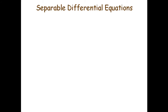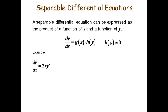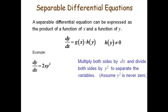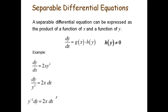What is a separable differential equation? A separable differential equation can be expressed as a product of a function of x and y: dy/dx equals g(x) times h(y), where h(y) is not equal to 0. For an example, dy/dx equals 2x times y squared. We separate the variables by multiplying both sides by dx and dividing both sides by y squared.